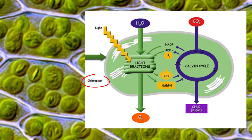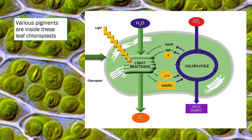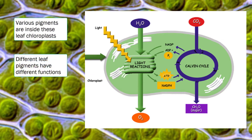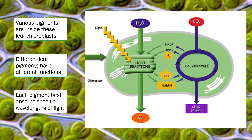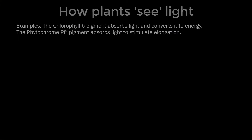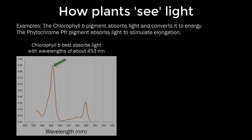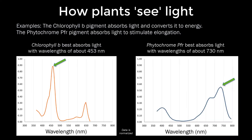Inside the chloroplasts are various protein pigments, and each of these pigments has different functions. In addition, each pigment best absorbs specific wavelengths of light. For example, if we look at chlorophyll B, we see that it best absorbs light at wavelengths of about 453 nanometers. While another pigment, phytochrome PFR, best absorbs light at a wavelength of about 730 nanometers.